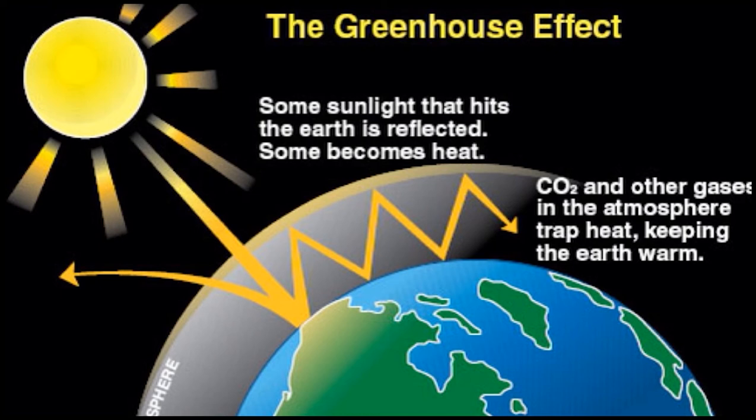Without our atmospheric greenhouse the earth would be very cold. The problem is not that too little sun warmth is reaching the earth, but that too much is being trapped in our atmosphere. When too much carbon dioxide is released into the atmosphere, it will form a thick layer and trap the heat from the sun. So much heat is kept inside that the temperature of the earth is going up faster than any previous time in history. Global warming is the slow increase in the average temperature of the earth's atmosphere.